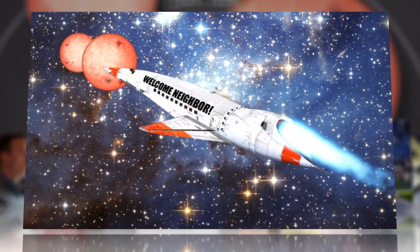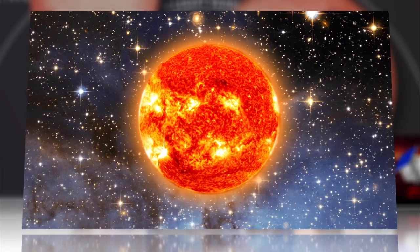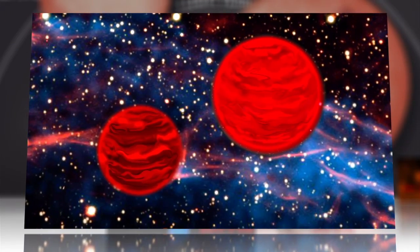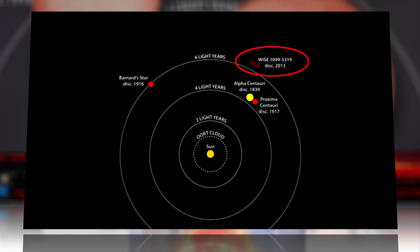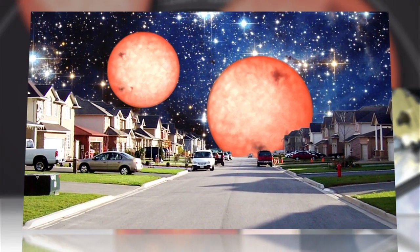Is it too late to send out the welcome wagon? Our Sun has a pair of neighbors we never knew about until now. Located 6.5 light-years away, just down the street in universal terms.